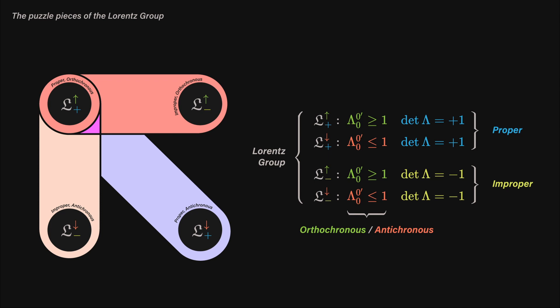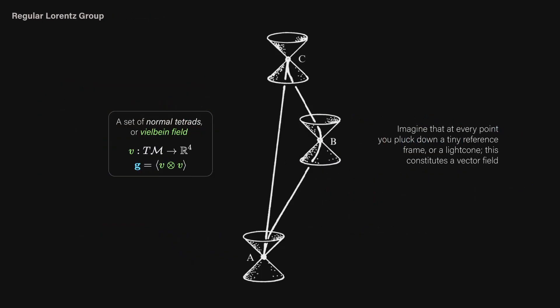The up arrow denotes orthochronous, the down arrow antichronous, the plus is proper, and the minus is improper. The subgroup of proper orthochronous transformations is known as the regular Lorentz group, and is a normal tetrad. That is, there have been no unusual modifications to the observer's view. We'll later see how this relates to the spinor structure.